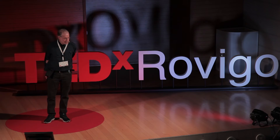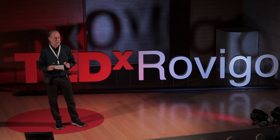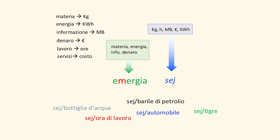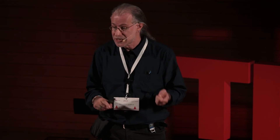Non voglio parlare di Emergia nel dettaglio. Mi interessa solo che sappiate che questa cosa esiste, e che ci permette virtualmente di calcolare quanti SEJ sono serviti — o meglio, sono virtualmente contenuti — in un barile di petrolio, in un'ora di lavoro, in una bottiglia d'acqua, in una tigre. Pensate a quanta informazione è stata necessaria per produrre la tigre, informazione immagazzinata nel suo DNA. È possibile contabilizzarla? È possibile.